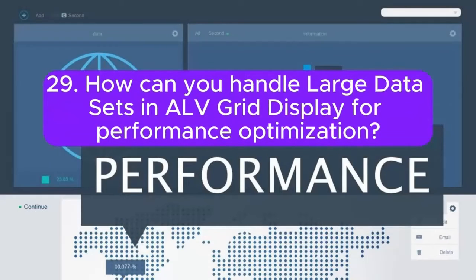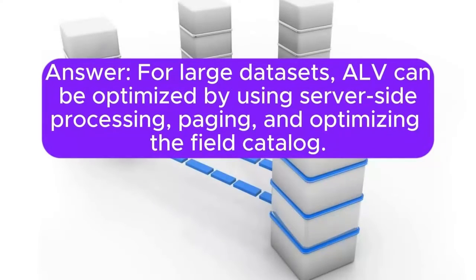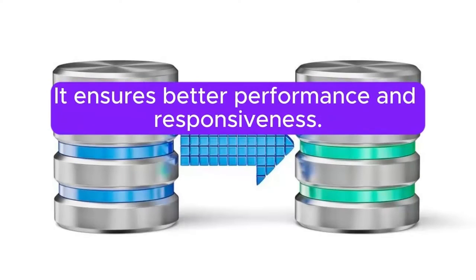Question 29: How can you handle large data sets in ALV grid display for performance optimization? Answer: For large data sets, ALV can be optimized by using server-side processing, paging, and optimizing the field catalog. This ensures better performance and responsiveness.